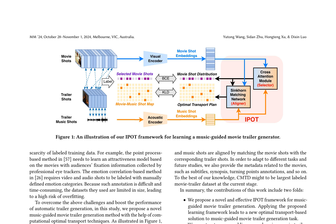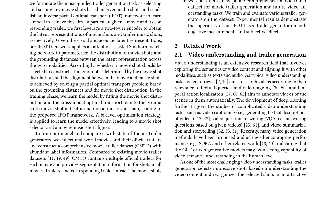The framework consists of a two-tower encoder, which obtains latent representations of movie shots and trailer music shots, followed by an attention-assisted sinkhorn matching network. This network parameterizes the distribution of movie shots and grounds distances between the modalities, enabling the alignment of movie shots with music shots. The model is trained using a bi-level optimization strategy, comprising a movie shot selector and a movie music shot aligner. This strategy optimizes the selection of movie shots and their alignment with music shots, generating a coherent and engaging trailer.